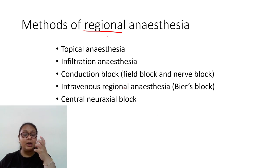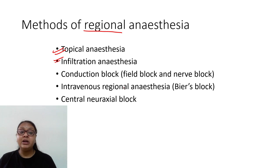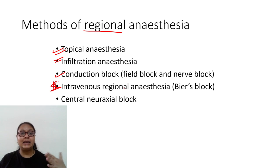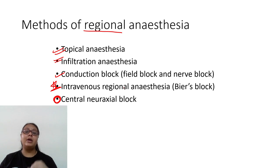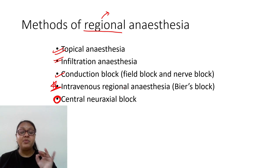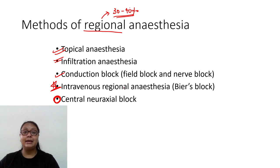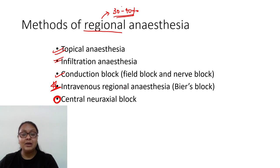Regional anesthesia can be administered in several ways: topical anesthesia such as numbing jelly applied to an area, infiltrating that area to anesthetize local nerves, conduction block, field block, nerve block, intravenous regional anesthesia (Bier's block — covered in a separate lecture), and central neuraxial anesthesia, which I'll discuss in detail in subsequent lectures. Regional anesthesia is very important — around 30 to 40 percent of exam questions come from this topic.